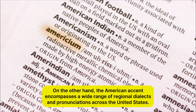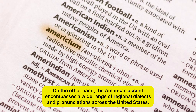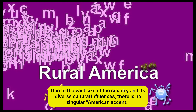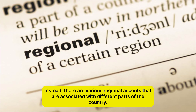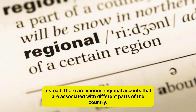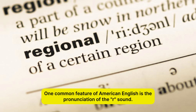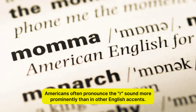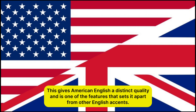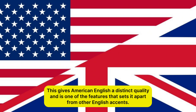On the other hand, the American accent encompasses a wide range of regional dialects and pronunciations across the United States. Due to the vast size of the country and its diverse cultural influences, there is no singular American accent. Instead, there are various regional accents that are associated with different parts of the country. One common feature of American English is the pronunciation of the R sound. Americans often pronounce the R sound more prominently than in other English accents. This gives American English a distinct quality and is one of the features that sets it apart from other English accents.